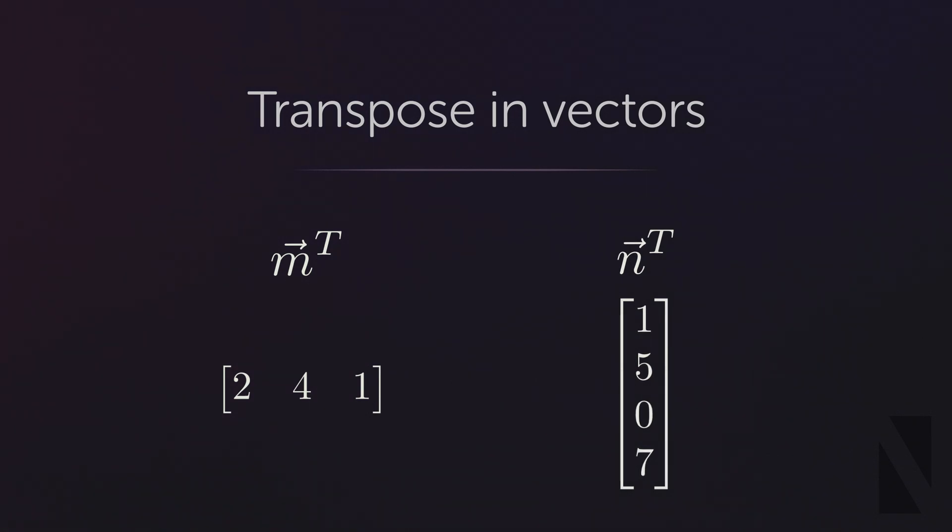It's important to consider transpose never changes the order of components. The order of elements or components remain the same as previously and just change the orientation of them. We show transpose in linear algebra using the letter T above the vector name. For example if I have a vector named P we show P transpose like this.